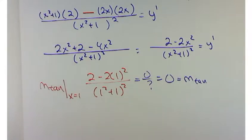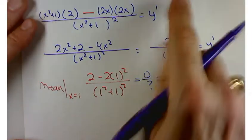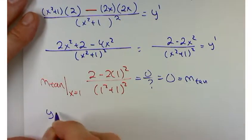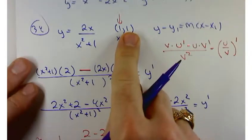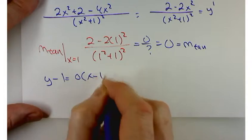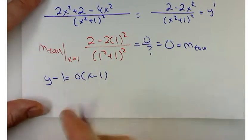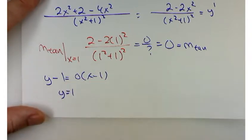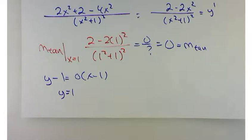That makes for an easy equation for the tangent line. My equation for the tangent line is going to be y minus 1 equals 0 times x minus 1. That whole thing disappears. So we get y equals 1 is the equation of the tangent line. Yeah, so it's just a horizontal line, right?